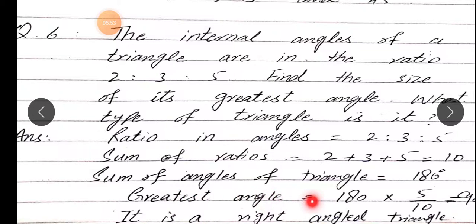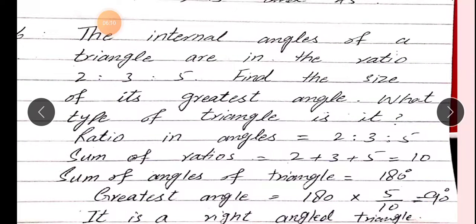To greatest angle kaun sa aayega? 180 multiply by 5 over 10. Sabse bada ratio 5 tha, so 5 over 10. Cutting karte hain: 180/10 = 18, then 18 × 5 = 90. Answer: 90 degrees. Toh agar 90 degree ka angle hai, to yeh kaun sa ho jaayega? It is a right-angled triangle.